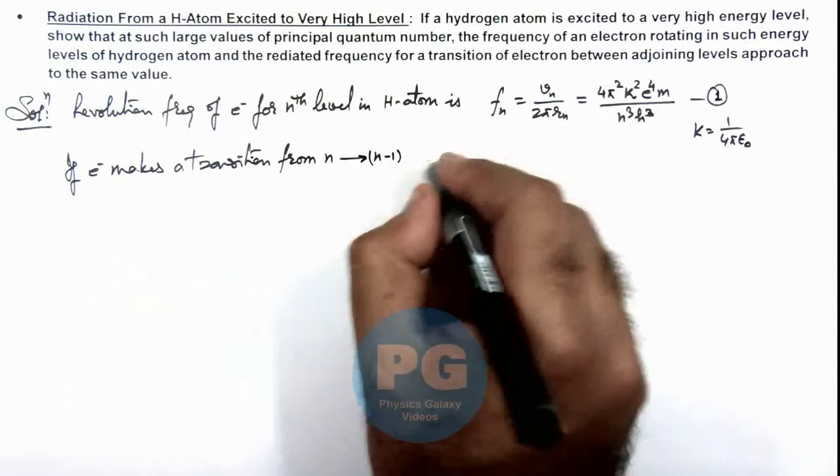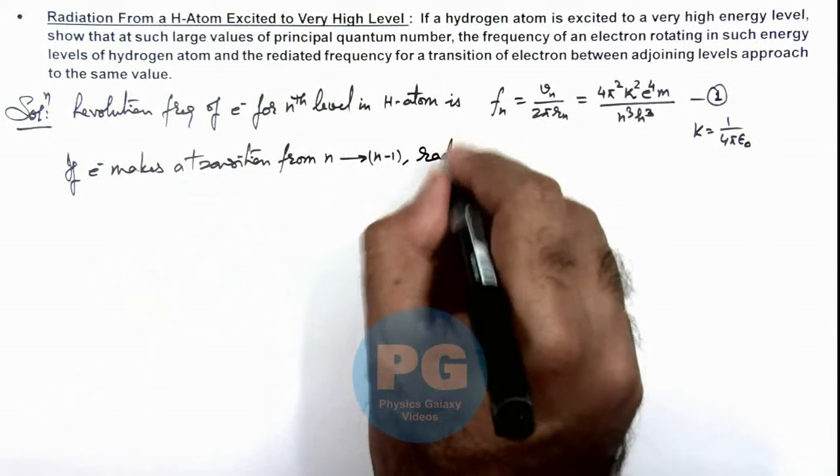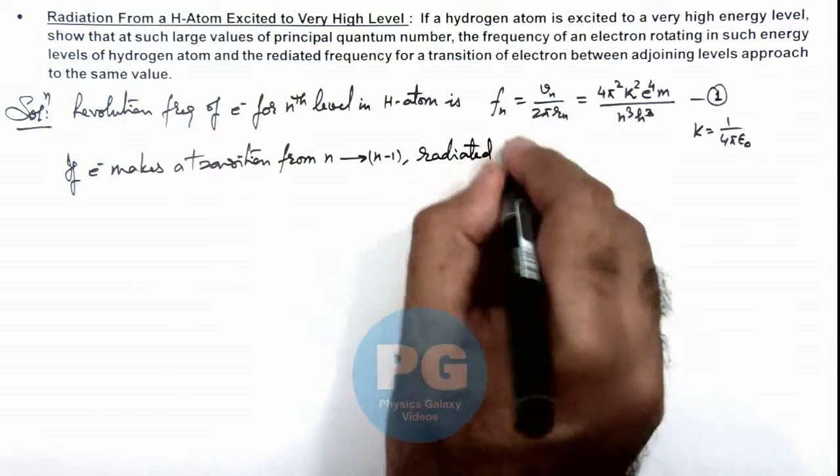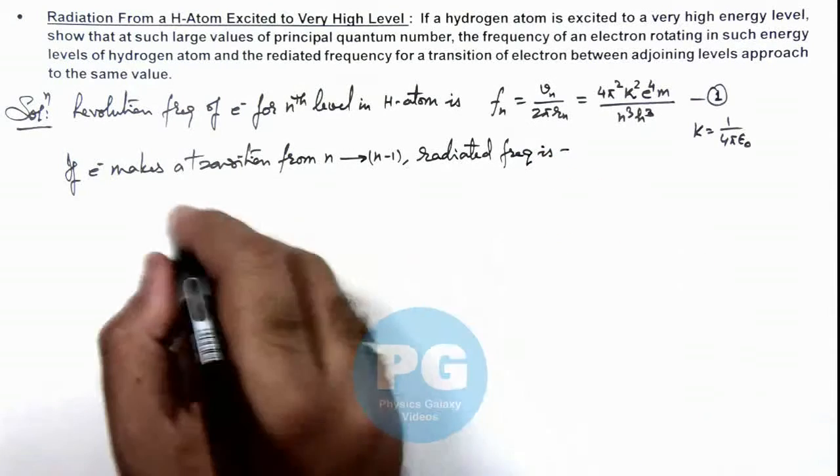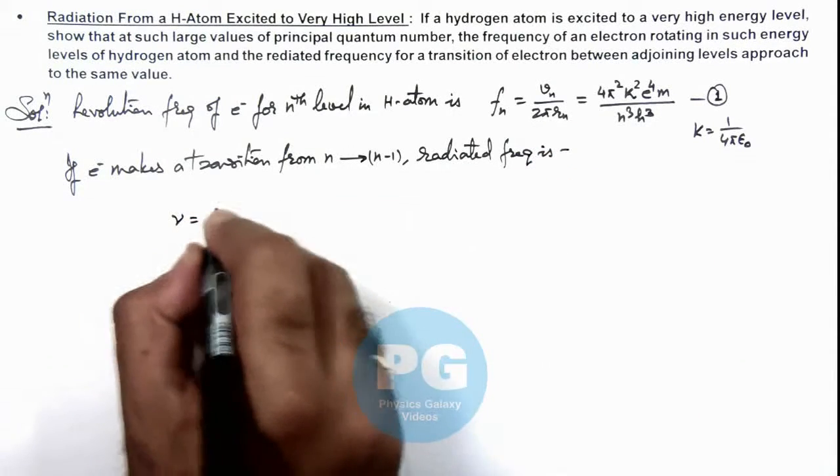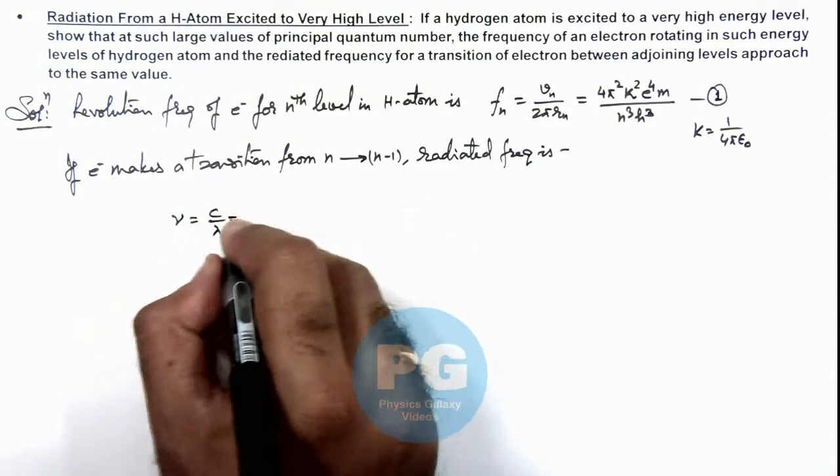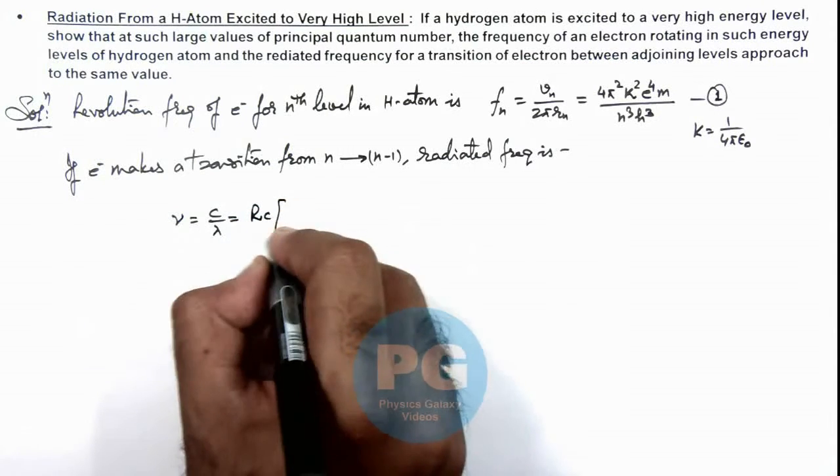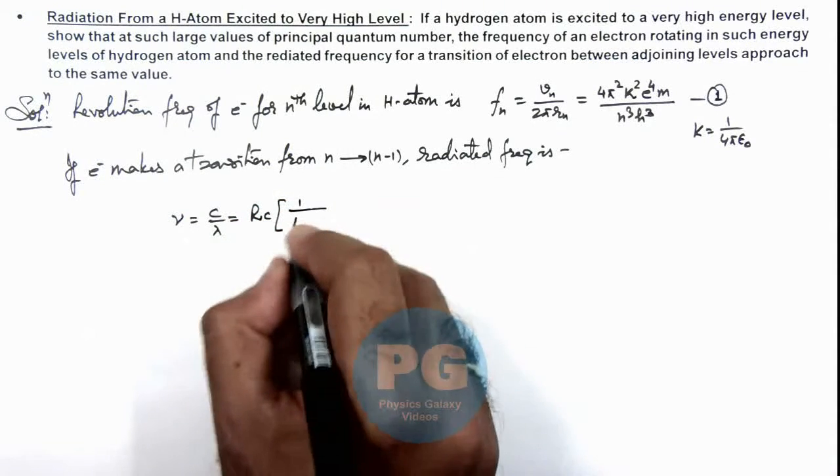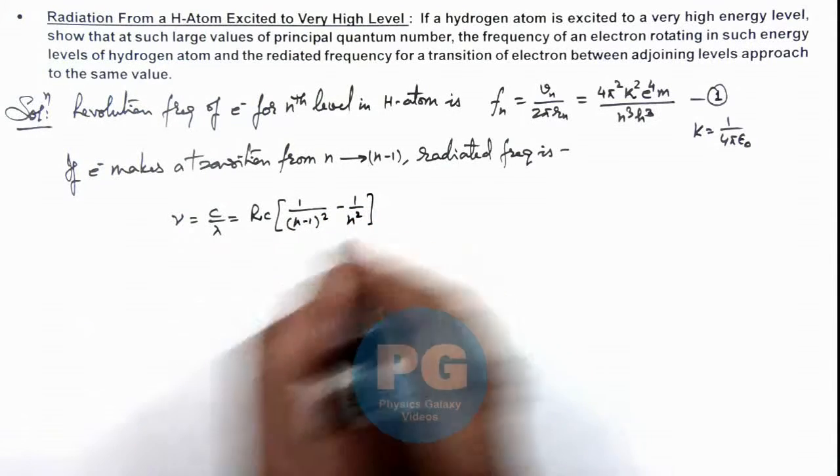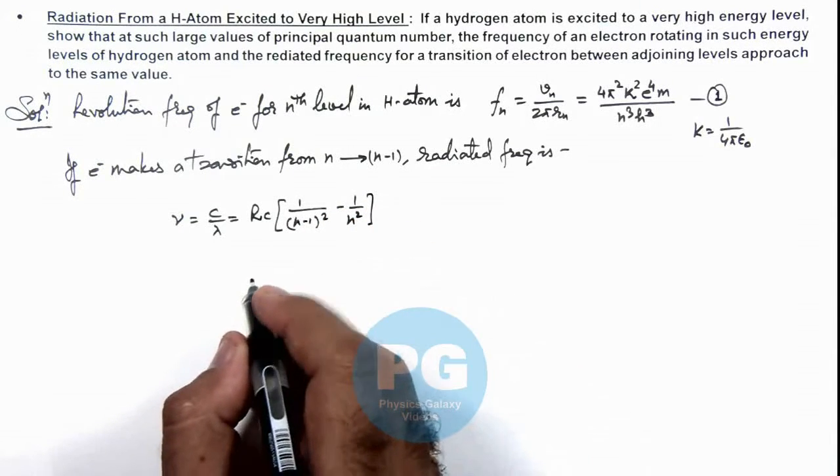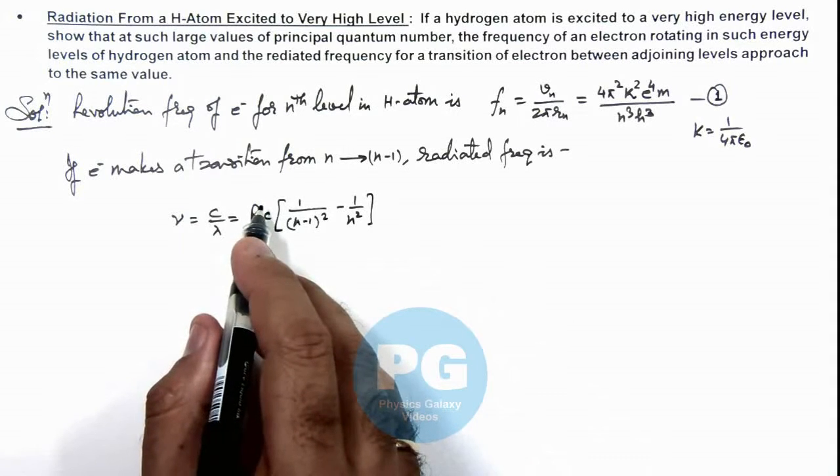And this multiplied by—if we just take the LCM, this gives n² minus (n-1)² divided by n² multiplied by (n-1)². And here value of c gets cancelled out. If we further simplify this value, and here we can take as n is very very greater than 1.